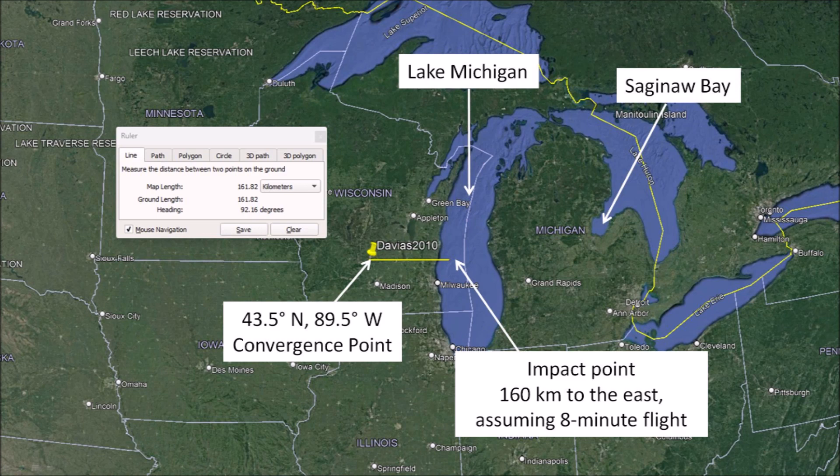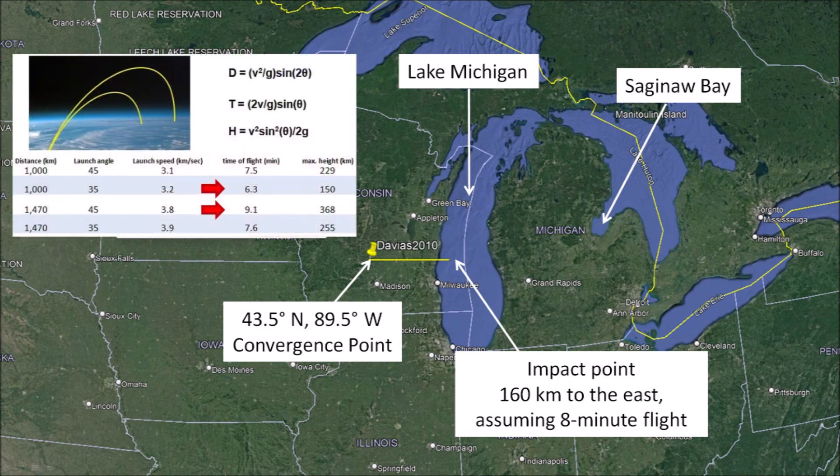The Davias and Gilbride 2010 paper says that Saginaw Bay was selected heuristically, although it is about 400 kilometers away from the convergence point. Associating Saginaw Bay with the convergence point would require 20-minute ballistic flights, but the calculation of flight times for various distances and launch angles for typical Carolina Bays only supports flight times of 6 to 9 minutes. Flight times of 8 minutes are more representative of the ballistic sedimentation of the glacier ice ejecta, and this means that Lake Michigan was the most likely site of an extraterrestrial impact.